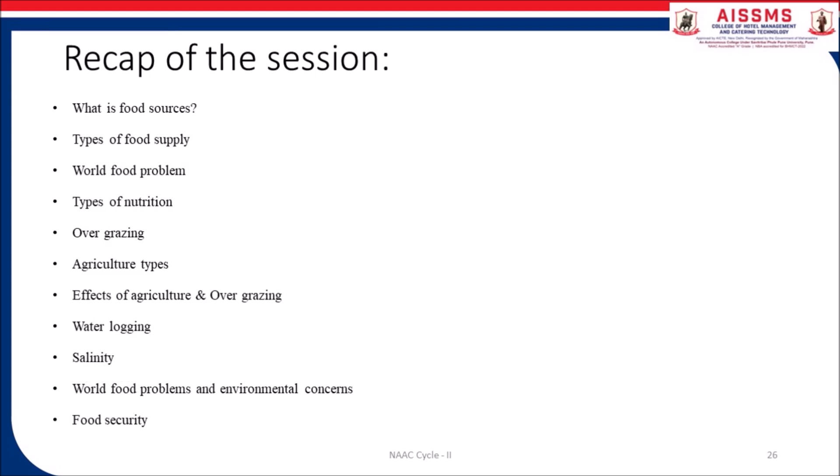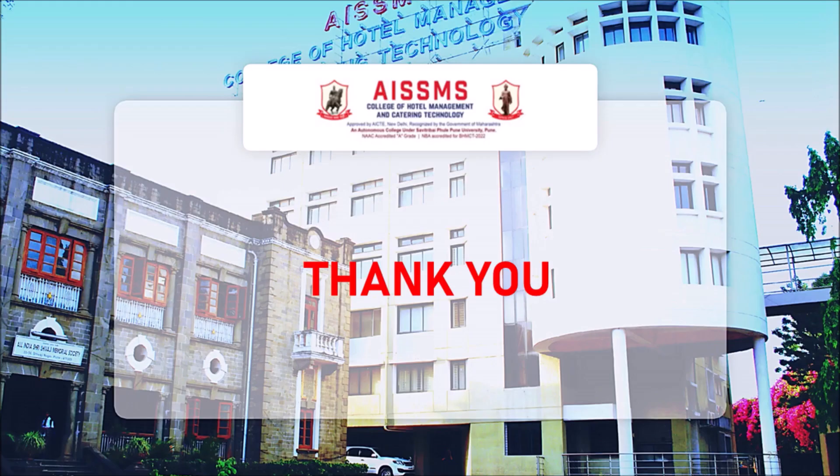Let us recap what we have learned in this session. We have seen what is food resource, different types of food supply, world food problems, types of nutrition, overgrazing, various types of agriculture, effect of agriculture and overgrazing, water lodging, salinity, world food problem and environmental concern, and lastly food security. Thank you.